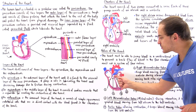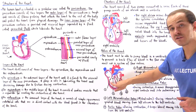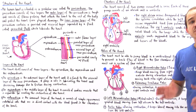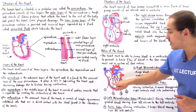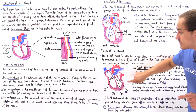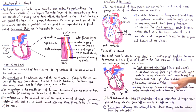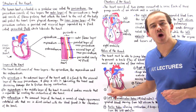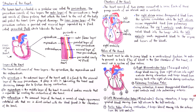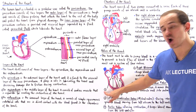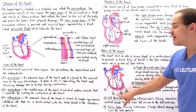Valve number two, the pulmonary semilunar valve, connects the right ventricle to the pulmonary arteries. When the right ventricle relaxes and valve one is open, valve two must be closed to prevent backflow from the pulmonary arteries back into the right ventricle. When the right ventricle contracts, valve one closes and valve two opens, allowing deoxygenated blood to flow into the pulmonary arteries. So when valve one is open, valve two is closed, and vice versa.